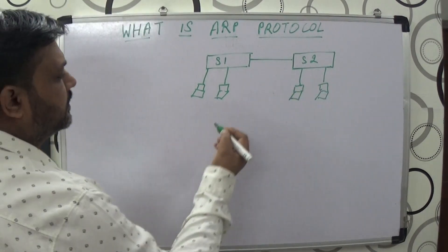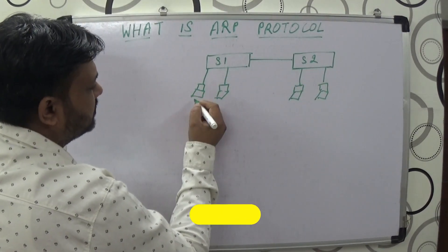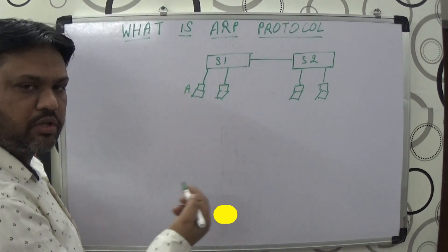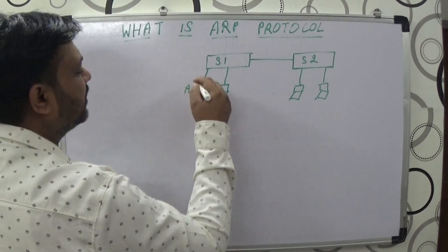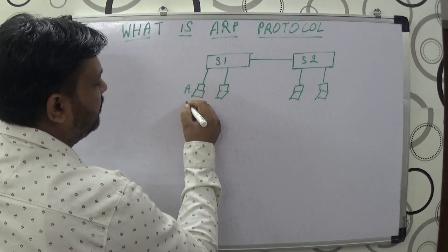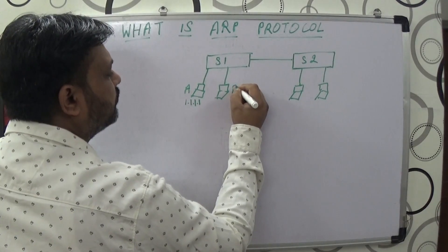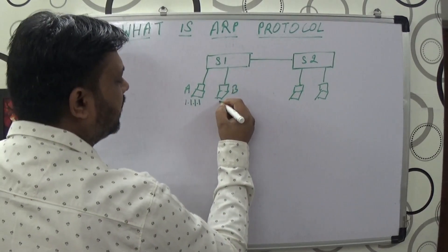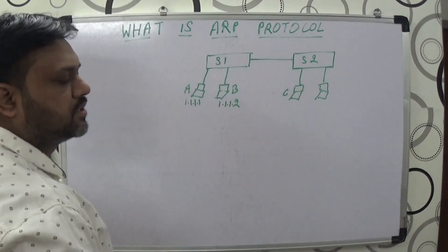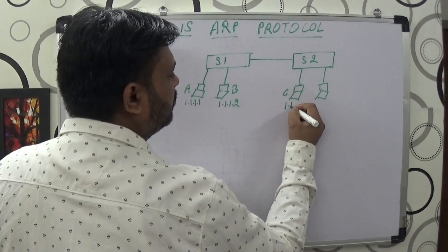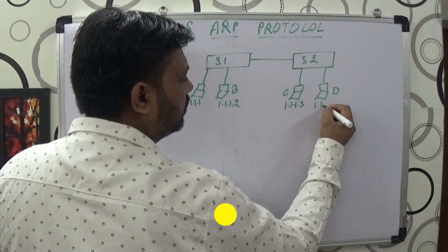Let us take the IP addresses and MAC addresses of this network. For example, this computer's MAC address is A and its IP address is 1.1.1.1. The other computer has MAC address B and IP address 1.1.1.2. On switch number two, one computer has MAC address C and IP address 1.1.1.3, and the last one has MAC address D and IP address 1.1.1.4.